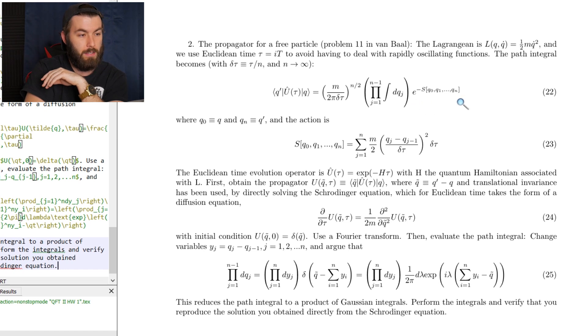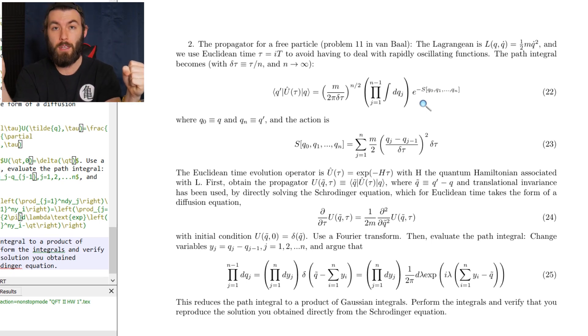And this stuff is weighted by this e to the minus s. This s is actually the action. So you may have heard of the principle of least action, which says that nature is lazy. And this goes to show that all of those weird paths that a particle could take from going from point A to point B don't contribute much to the overall probability amplitude.